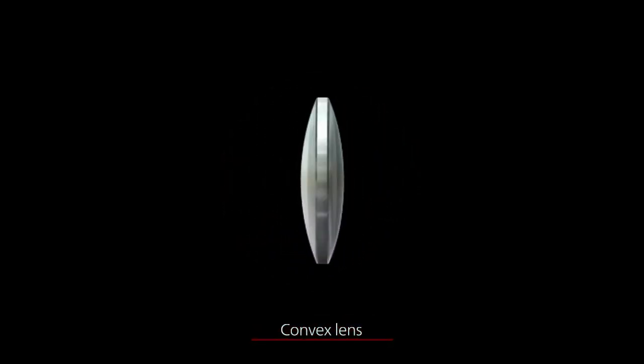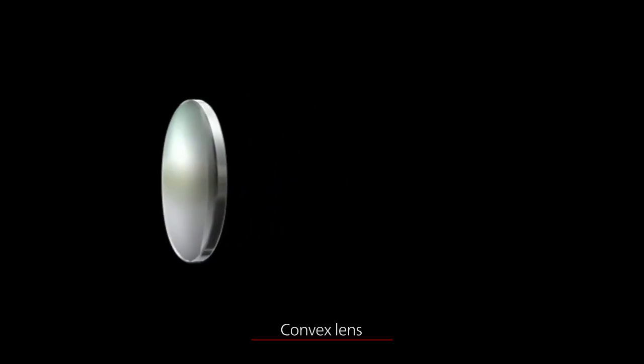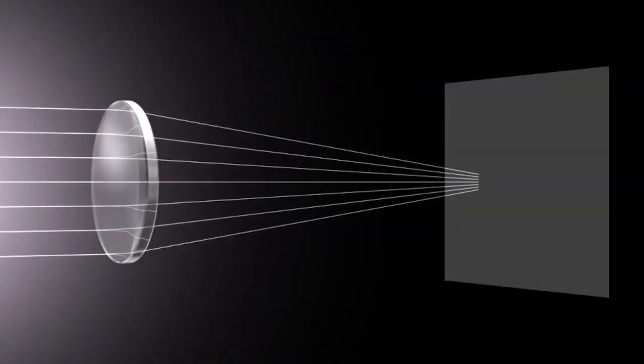Lenses that are thicker at the middle are called convex lenses. These lenses cause parallel light rays to converge to a single point, called the focal point.